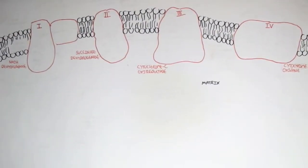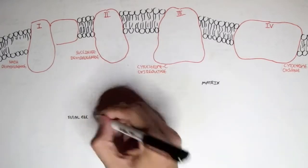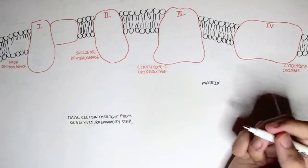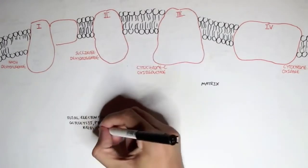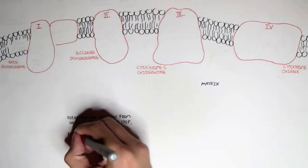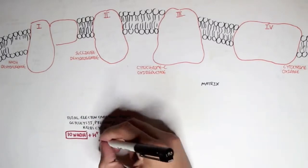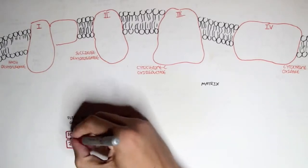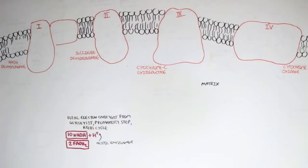The two important substances to begin the oxidative phosphorylation process are the electron carriers from glycolysis, from the preparatory step, and the Krebs cycle. The total amount of electron carriers from each of these processes are 10 NADHs and 2 FADH2s. We have to understand what the electron transport chain is and what oxidative phosphorylation is.